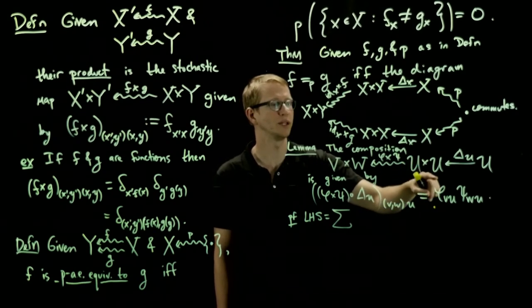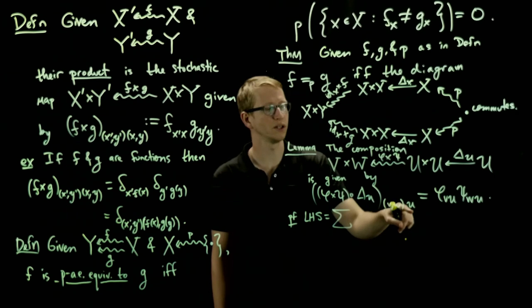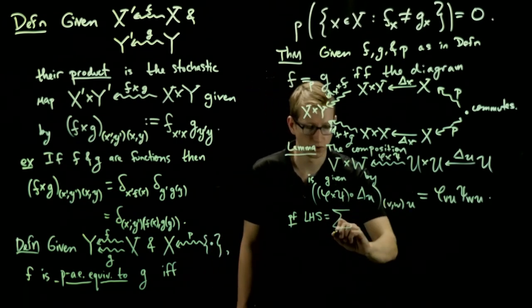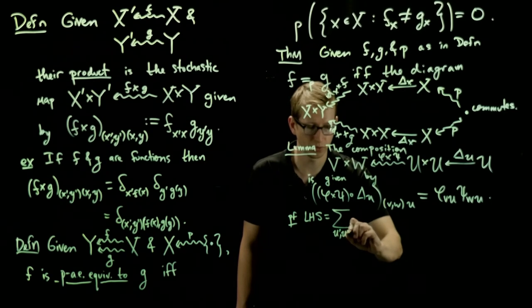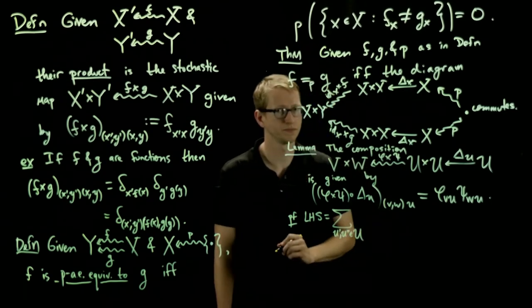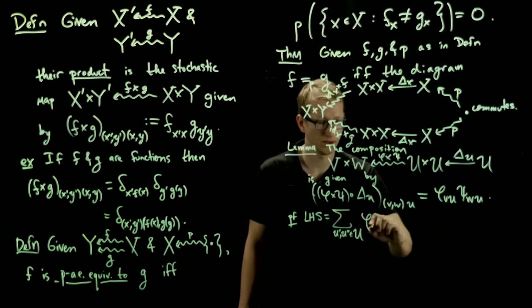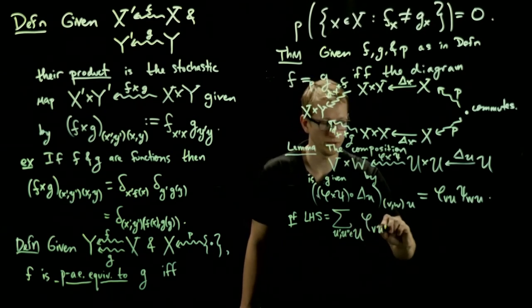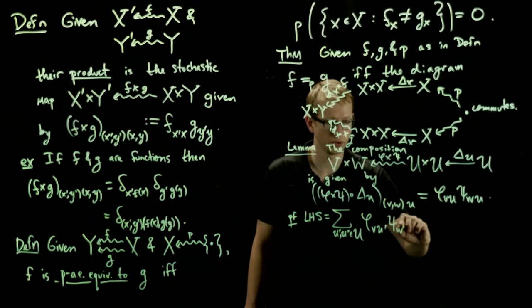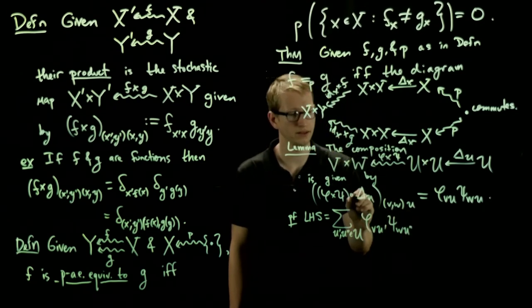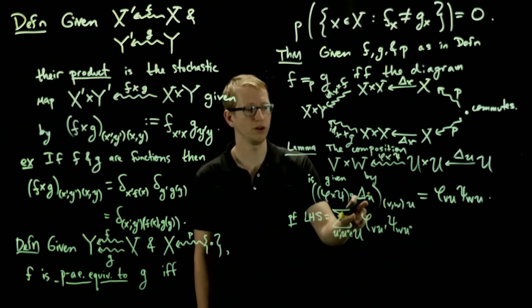We're already using the letter u, so we're going to have to introduce u' and u'', for instance. So it's going to be u', u'', both elements in u. And the product here is going to be φ_vu', ψ_wu'', because that's the second coordinate. And this is, as we recall, the Kronecker delta twice.